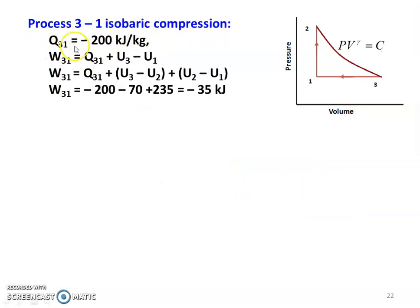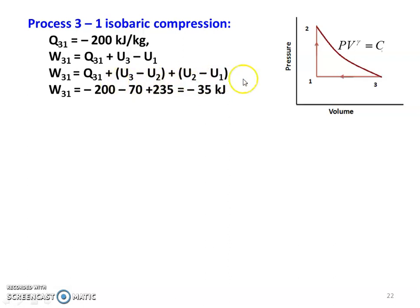For Process 3 to 1, constant pressure process with heat rejection of minus 200 kilojoules. W31 equal to Q31 plus (U3 minus U1), which expands to Q31 plus (U3 minus U2) plus (U2 minus U1). Substituting values: Q31 equal to minus 200, U3 minus U2 equal to minus 70, U2 minus U1 equal to 235. Therefore W31 equal to minus 200 plus (minus 70) plus 235 equal to minus 35 kilojoules.